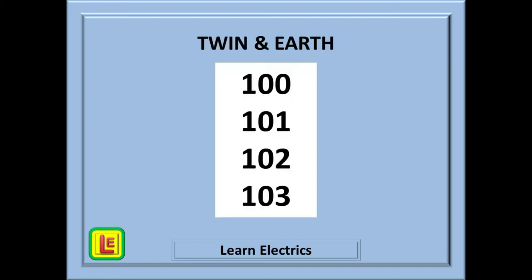Now, for twin and earth cables, really easy. There are just four reference methods: 100, 101, 102, 103. And there is an easy way of remembering these.